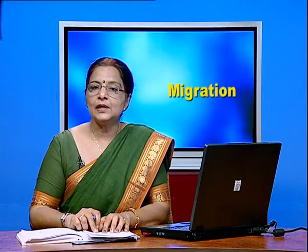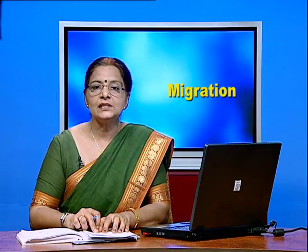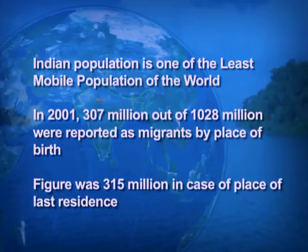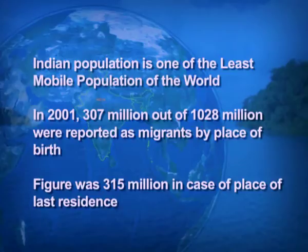There are a few facts about the Indian population and their movement. The Indian population is one of the least mobile populations in the world, perhaps due to the traditional tendency of Indians not wanting to make changes in their lives. In 2001, 307 million people — that is around 30 percent of the population — were reported as migrants on the basis of place of birth. When we consider place of last residence, it was 31 percent of the population that migrated under that criteria.